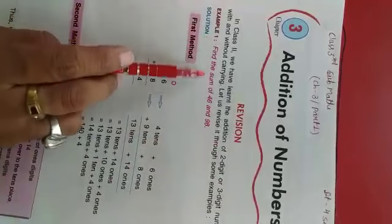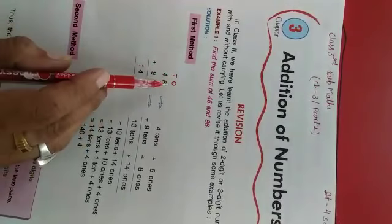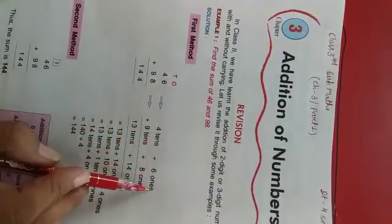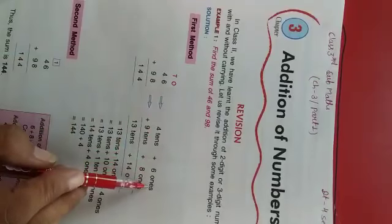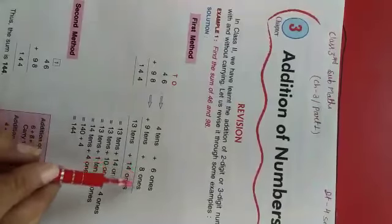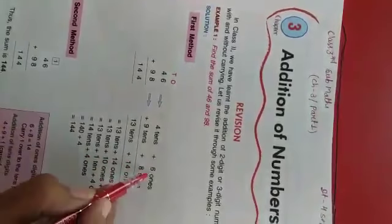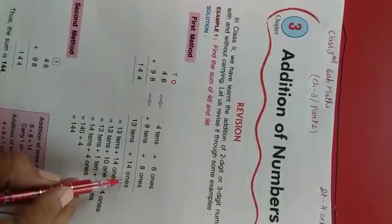First example: find the sum of 46 and 98. Using the first method, we write using tens and ones place. 46 = 4 tens + 6 ones, and 98 = 9 tens + 8 ones. If we add the ones: 6 + 8 = 14. So we get 14 ones.